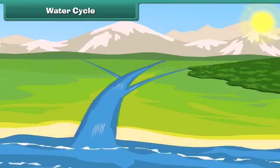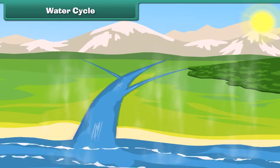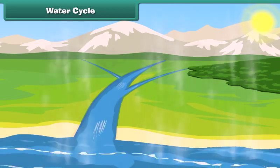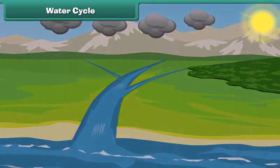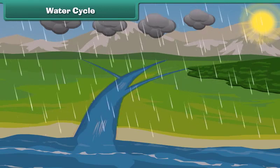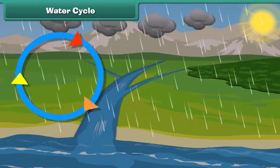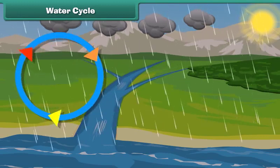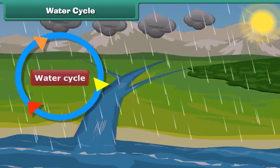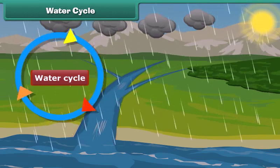Finally, the water reaches the water bodies and gets collected there. You can see water is constantly cycling from land to air and back to land again. This process is known as the water cycle. Therefore, kids, water on our earth will never come to an end.